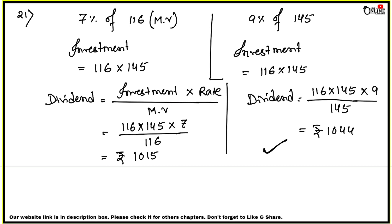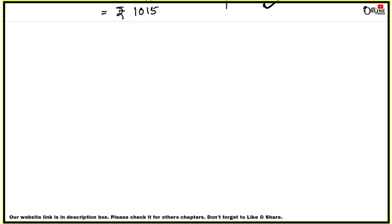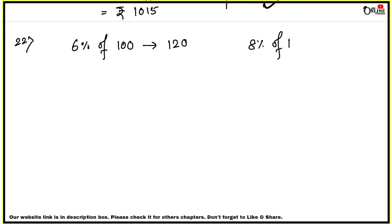Next, sum number 22: which is the better investment? Option one is 6% of Rs.100 shares at Rs.120. Option two is 8% of Rs.10 shares at Rs.15.